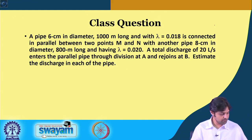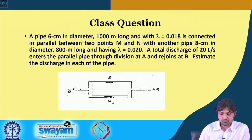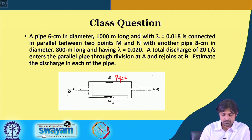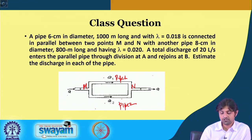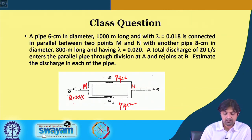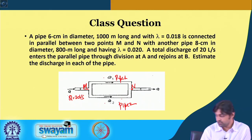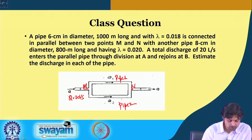We solve a class question using continuity. A pipe of 6 cm diameter, 1000 m long, with λ = 0.018 is connected in parallel with a pipe of 8 cm diameter, 800 m long, with λ = 0.020, between two points M and N. A total discharge of 20 liters per second enters the parallel system, divides at A, and rejoins at B. Estimate the discharge in each pipe.